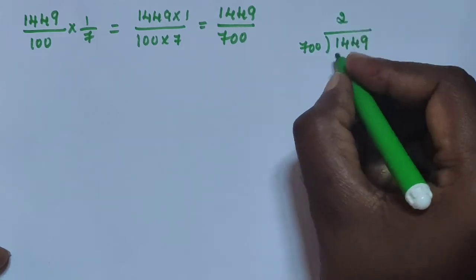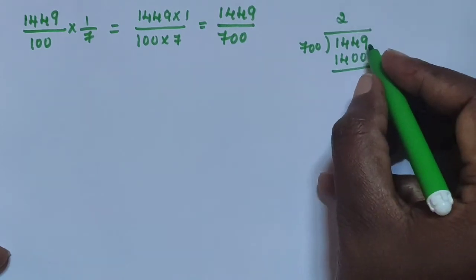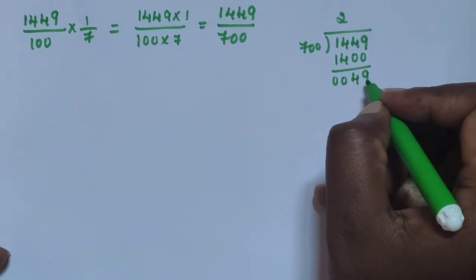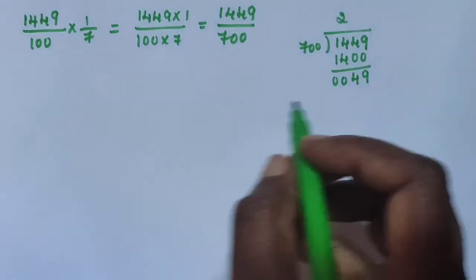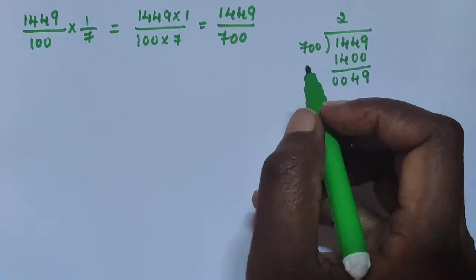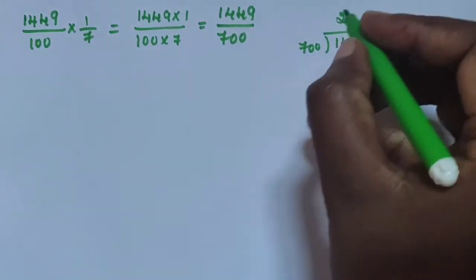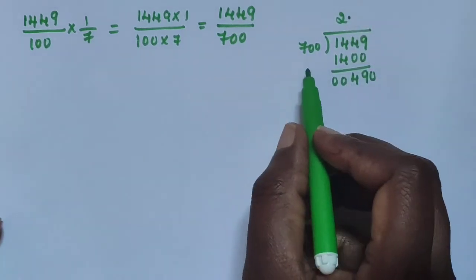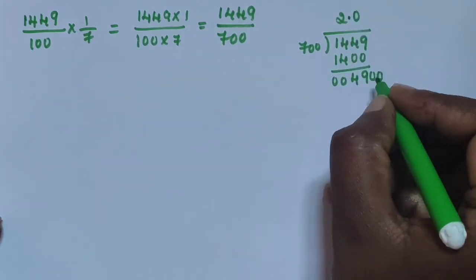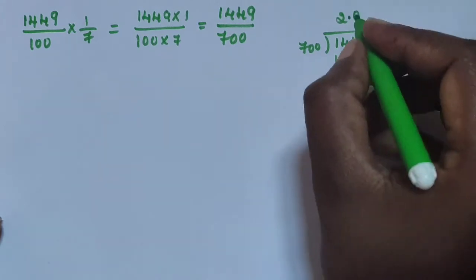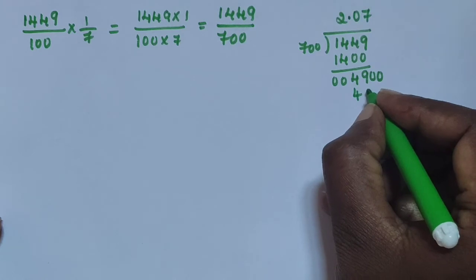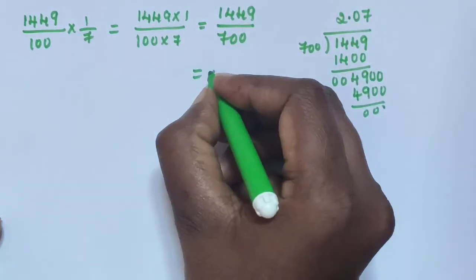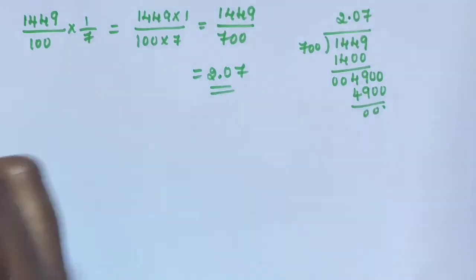700 times 2 is 1400. Then 9, 4: 4 minus 4 is 0. Remaining 49. 49 is smaller than 700, so apply decimal point. Add a zero: 490 is also smaller than 700, add another zero. 700 times 7 is 4900. The answer is 2.07.